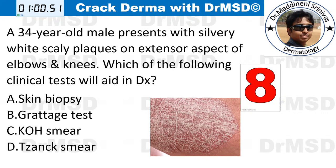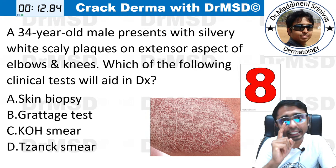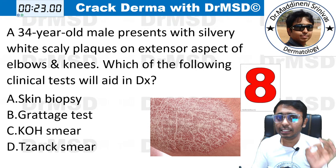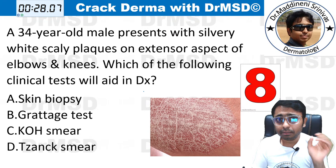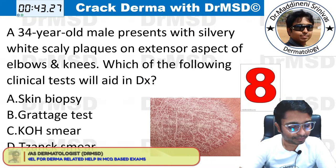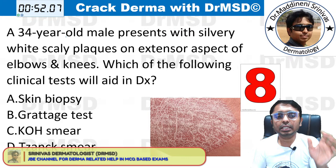Question number eight. A 34-year-old male presents with silvery white scaly plaques on the extensor aspect of the elbows and knees. Which of the following clinical tests will aid in the diagnosis? You should first identify the diagnosis and then know the clinical test — two steps. Most students answered option B. The time is up.